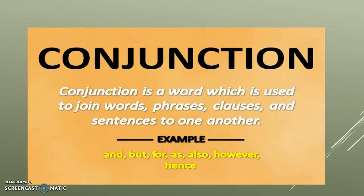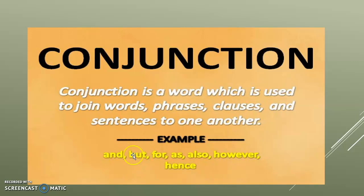Conjunction is a word which is used to join words, phrases, clauses, and sentences to one another. Examples include: and, but, for, as, also, whoever. All these types of words are used for the joining of words, phrases, clauses, and sentences.